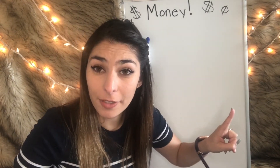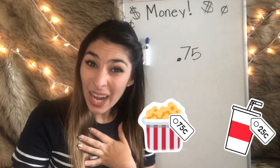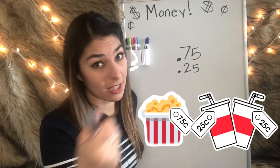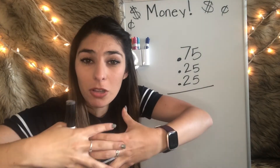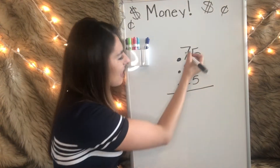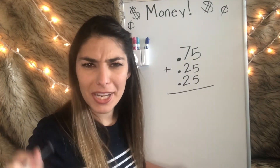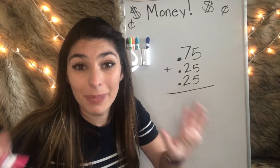Now that we've worked with the basic cents, I want to show you how to carry over, which means we are turning those cents into dollars. So let's say we go to the movies and we're going to share a popcorn. One popcorn costs 75 cents. Then I want something to drink and that's going to cost 25 cents, and you want a drink too, so that's going to be another 25 cents. Because we're putting those things all together, we're going to be adding. Let's make our H2 chart so we make sure everything is in its right place value.